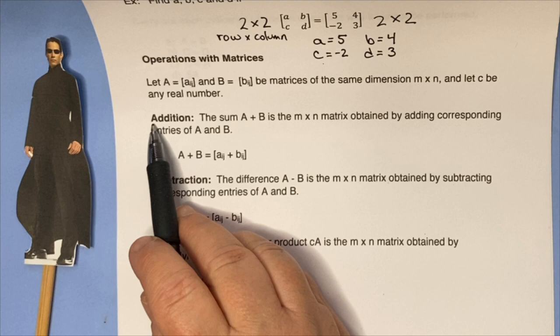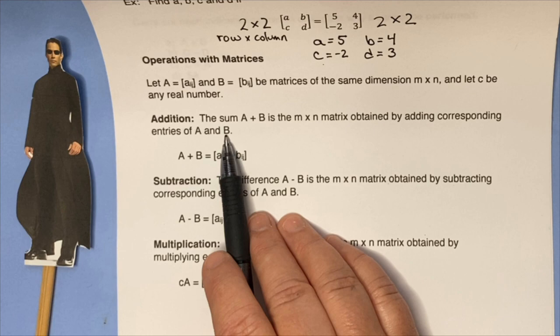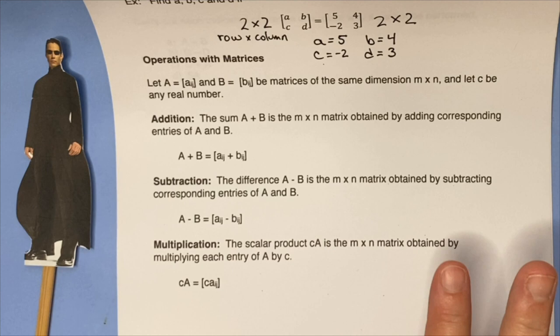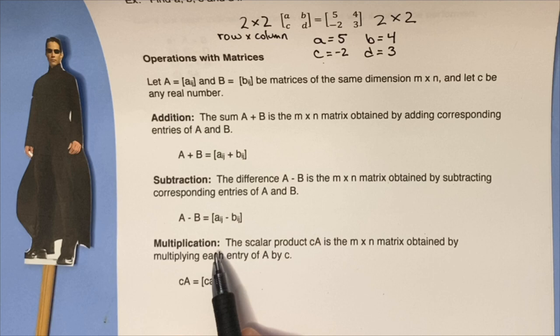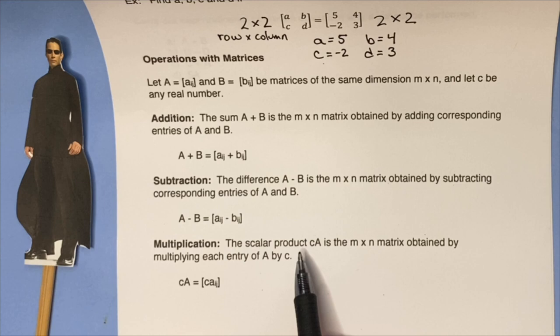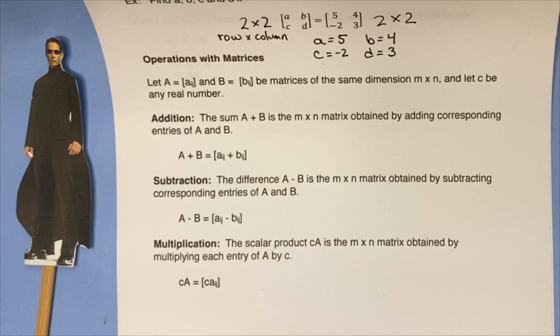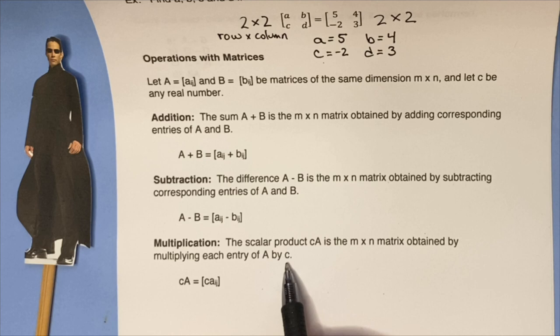Addition: The sum A + B is the m by n matrix obtained by adding corresponding entries. Subtraction is the same thing - we're going to subtract each corresponding number. Multiplication: the first one we're going to talk about is called a scalar product. Scalar multiplication means we're multiplying a matrix by a single number, not by another matrix. You just multiply each entry by the real number C.